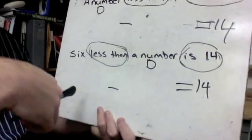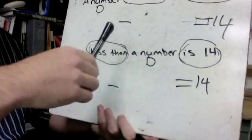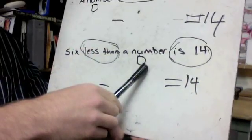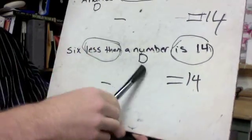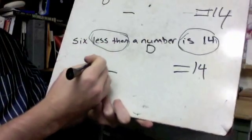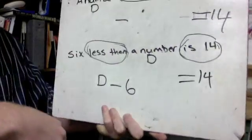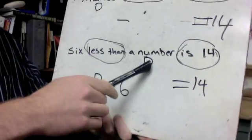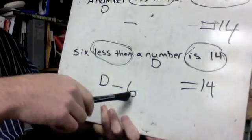So let's start with the bottom one. Six less than a number. So six less than this. So to write six less than this, it would be d minus six. Because then we would have what it says. It's six less than this. This would be six less than this.